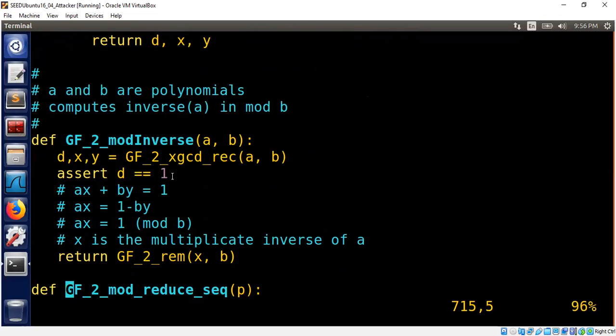As I said earlier, inverse only exists if D is 1, and then all I'm doing is just return X in Galois field. So that's basically the inverse of one polynomial. The polynomial inverse is X for the given polynomial A.